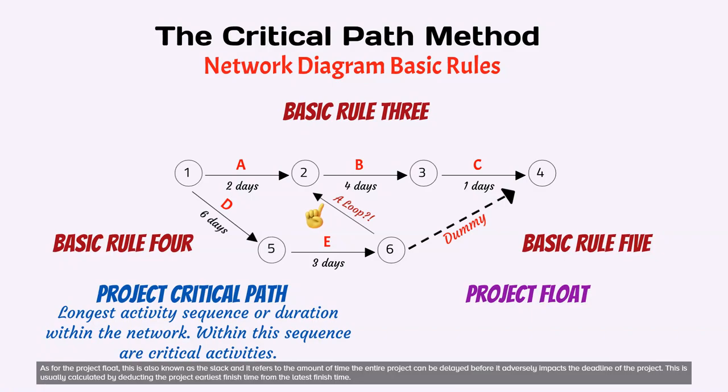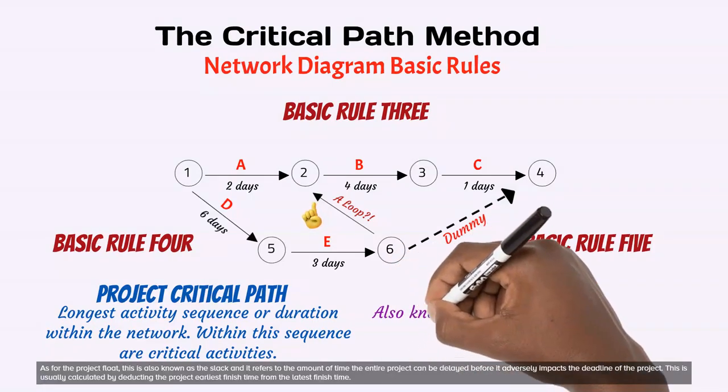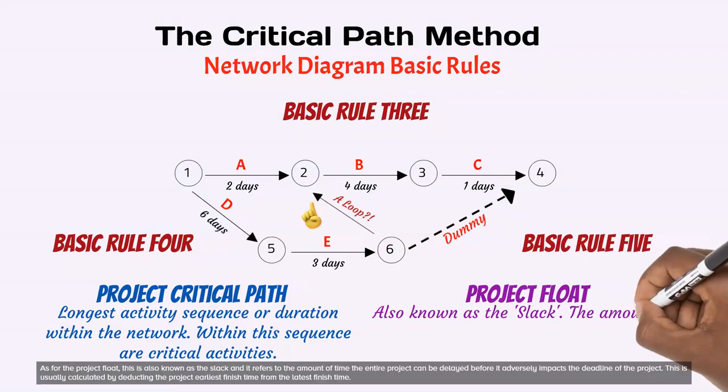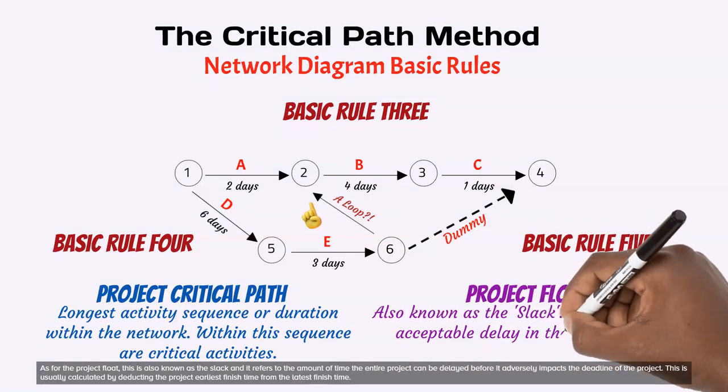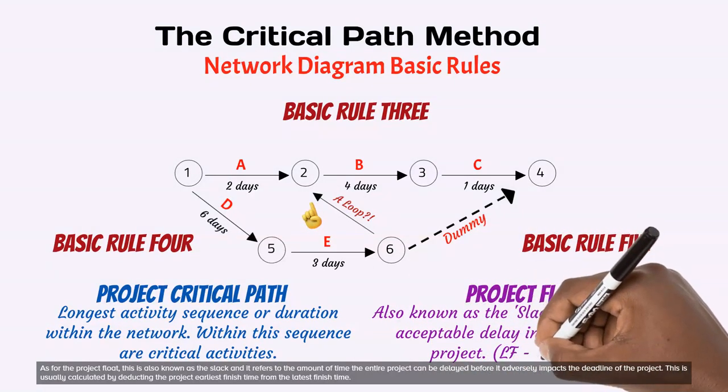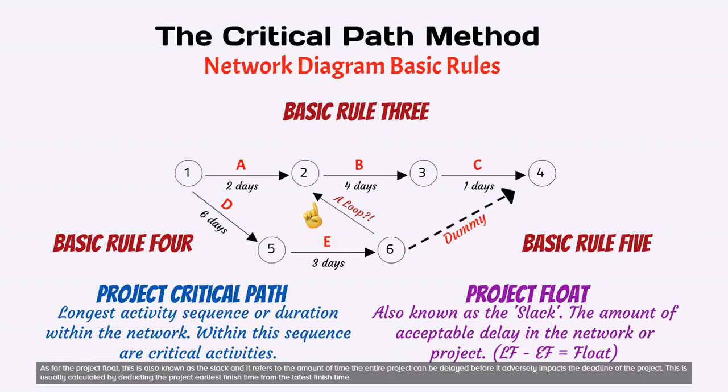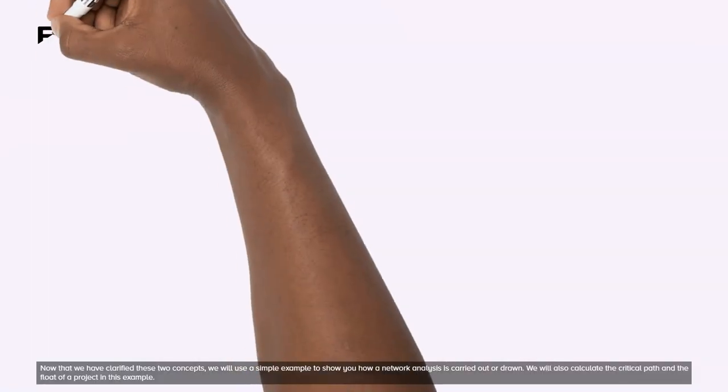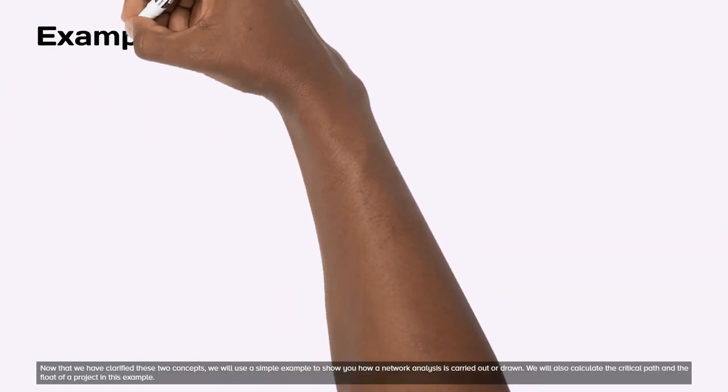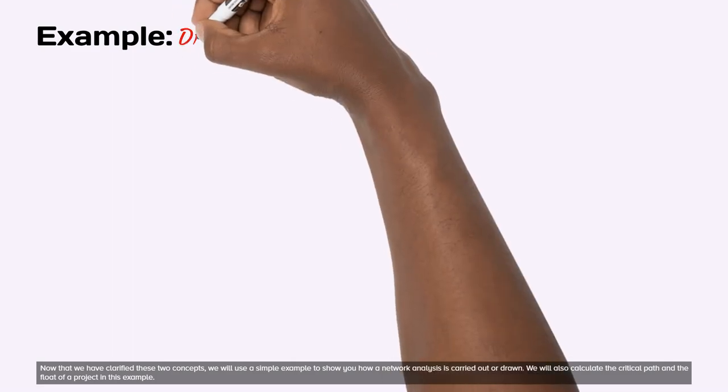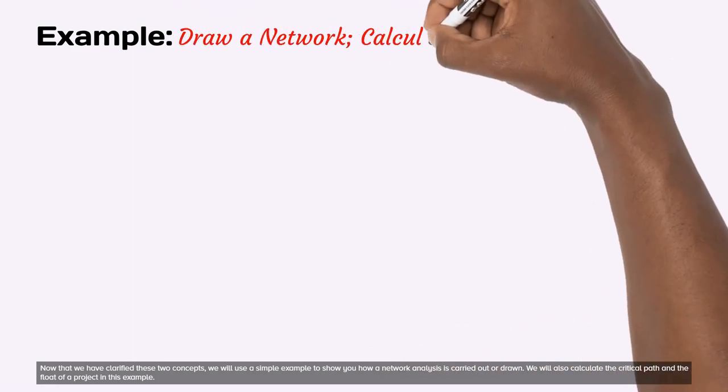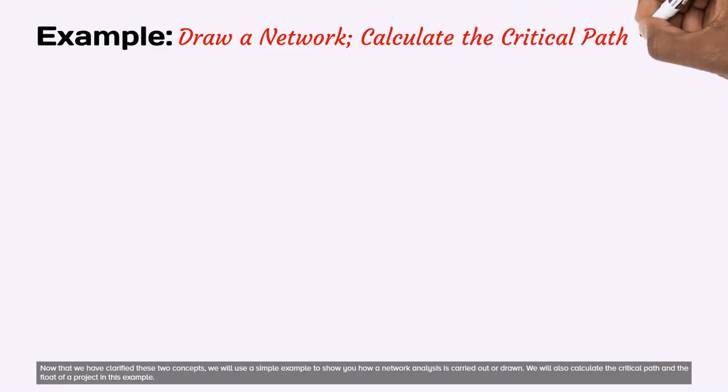As for the project float, this is also known as the slack and it refers to the amount of time the entire project can be delayed before it adversely impacts the deadline of the project. This is usually calculated by deducting the project earliest finish time from the latest finish time. Now that we have clarified these two concepts, we will use a simple example to show you how a network analysis is carried out or drawn. We will also calculate the critical path and the float of a project in this example.